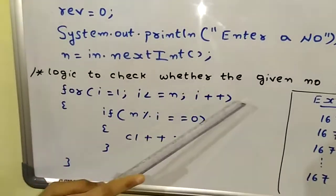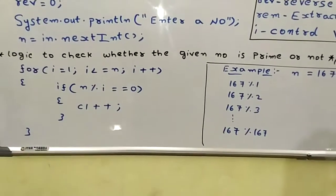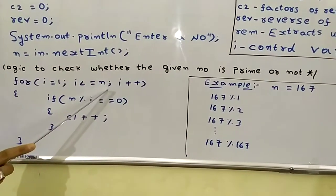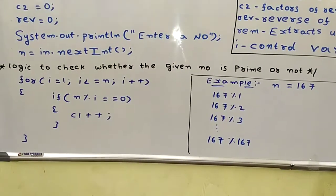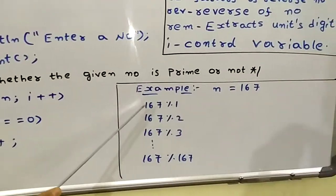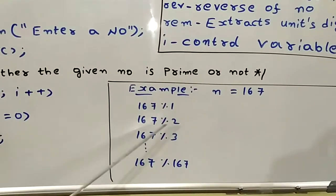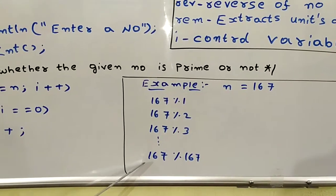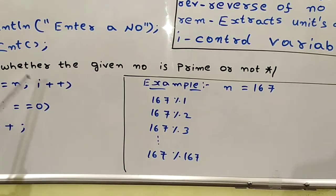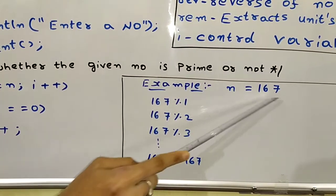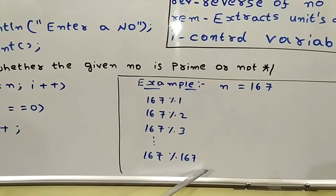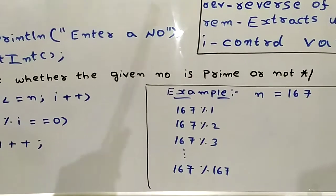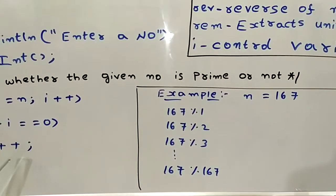This is the logic to check whether the given number is prime or not. A for loop runs from 1 to n — that means from 1 to 167. If n modulo i equals 0, then c1 is incremented. For example: when i = 1, 167 % 1; when i = 2, 167 % 2; when i = 3, 167 % 3 — and so on up to i = 167, which is the maximum limit. If the modulo operator returns 0, c1 is incremented.